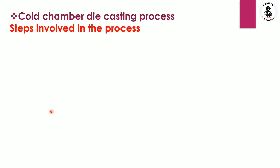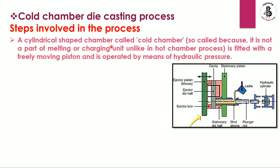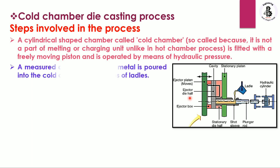The steps of the cold chamber die casting process involve a cylindrical-shaped chamber called the cold chamber, fitted with a freely moving piston operated by hydraulic pressure. This hydraulic system is connected with a plunger rod, which is connected to the cold chamber. A measured quantity of molten metal is poured into the cold chamber by means of the ladle, depending on the shape and size of the required component.